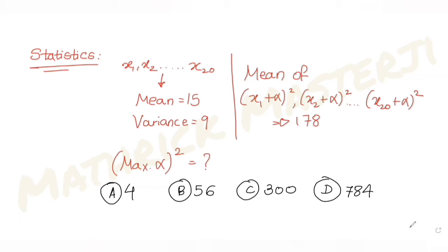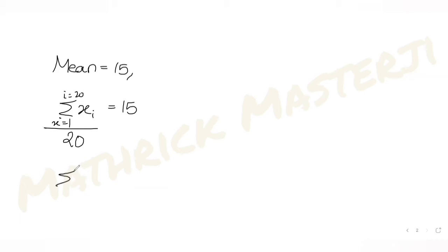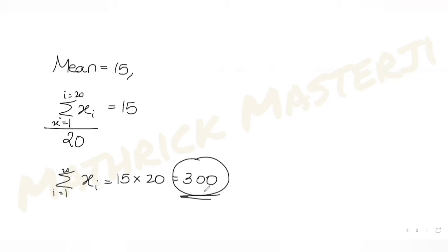First, we're told the 20 observations have mean 15. Mean is the summation of all 20 observations from i=1 to i=20, divided by the number of observations (20), equals 15. So the sum of all 20 observations from i=1 to 20 is 15 × 20 = 300. Sum of first 20 observations is 300.